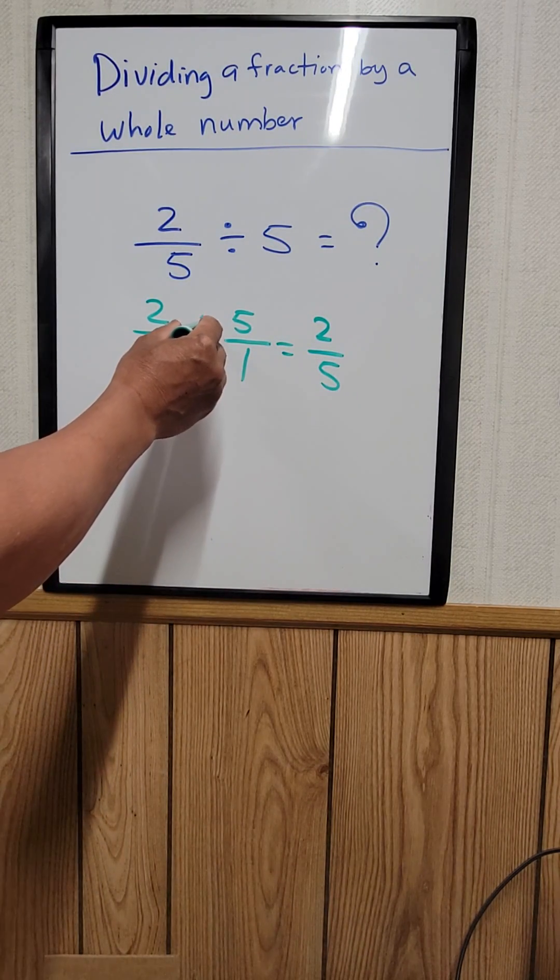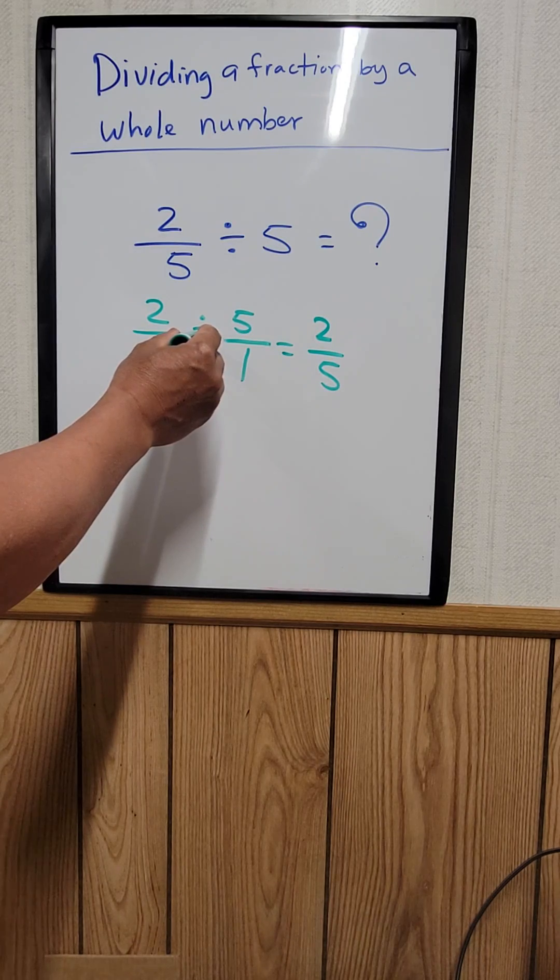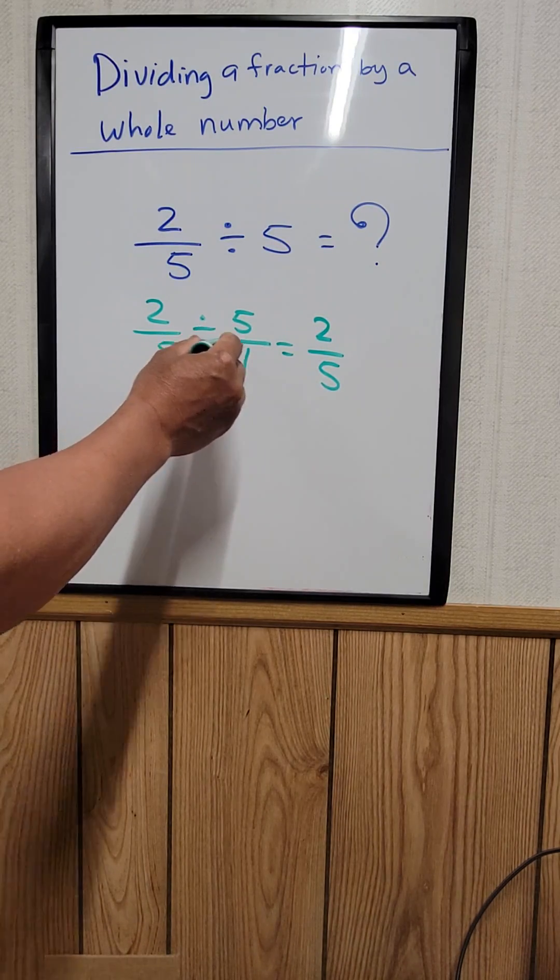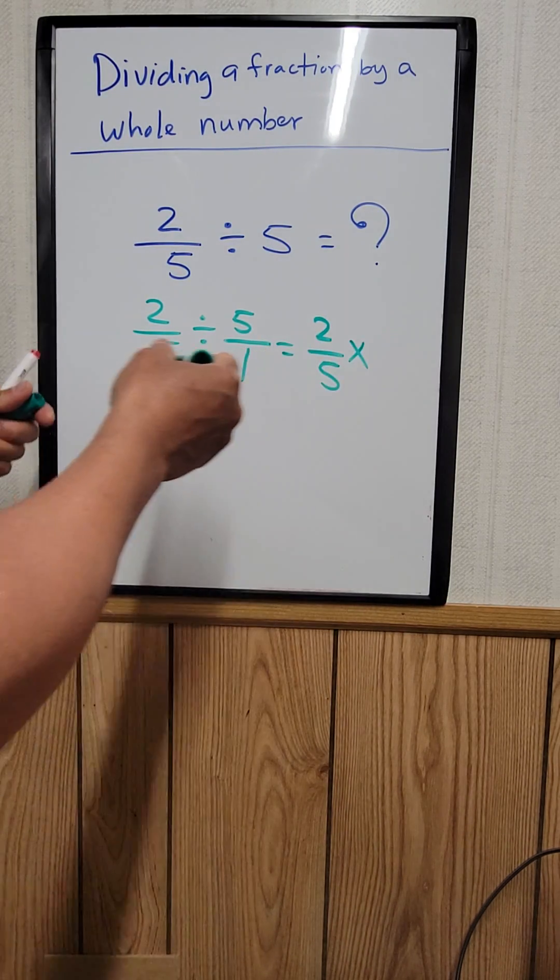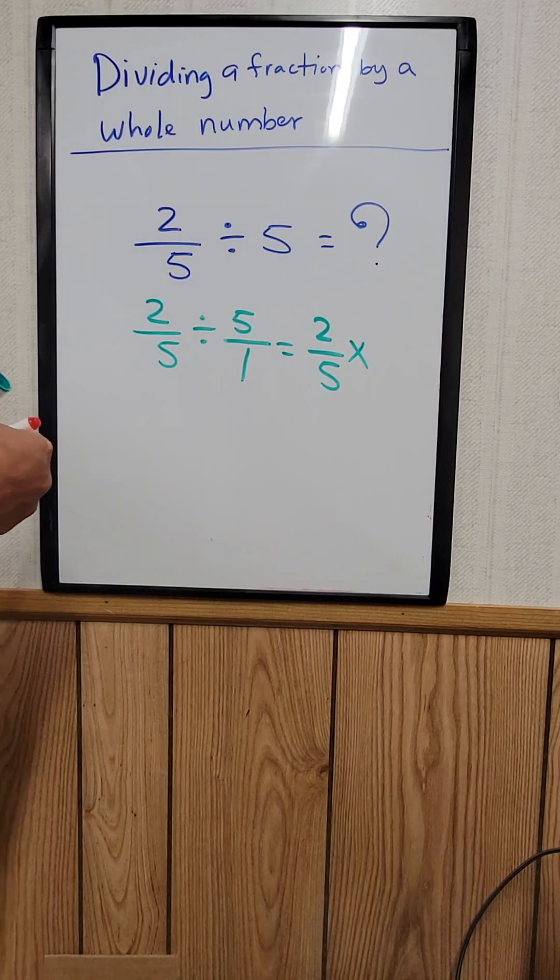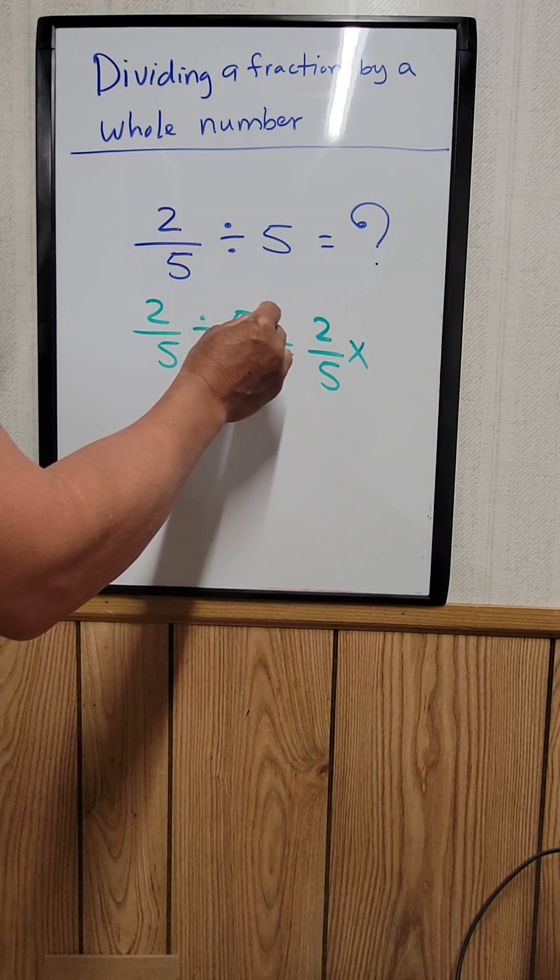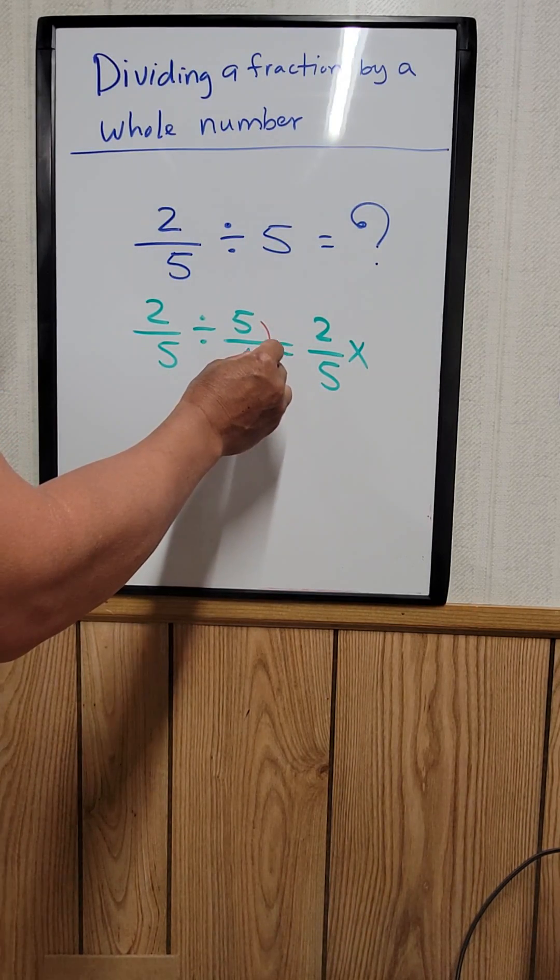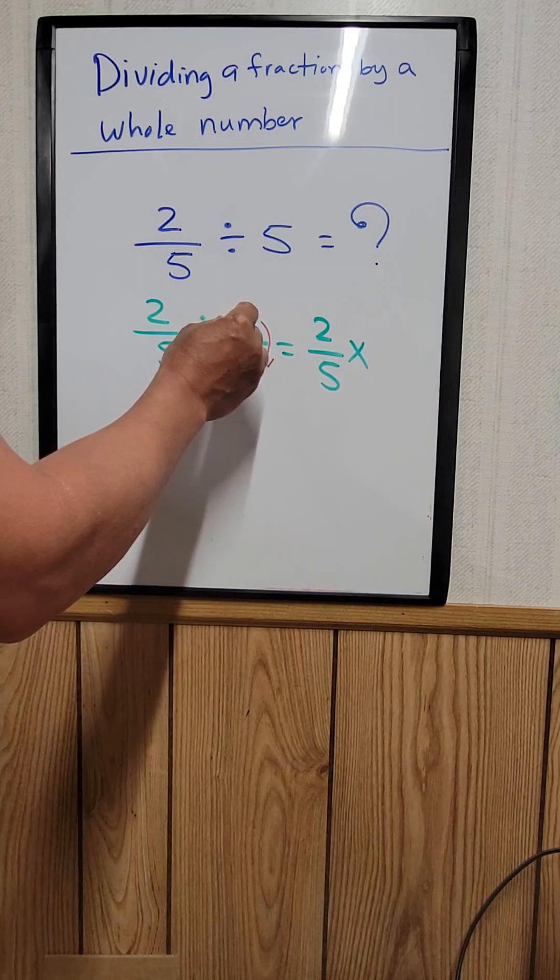Now we need to change the sign right here from a division to a multiplication. And then when you do that, you have to flip the number right here. The numerator becomes the denominator. The denominator becomes the numerator.